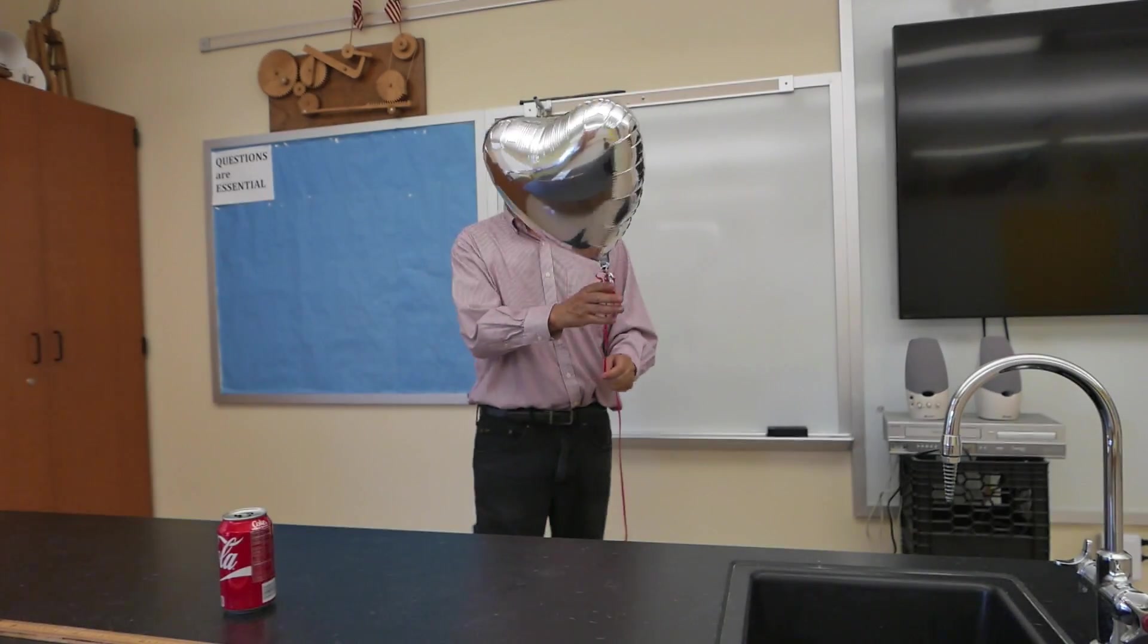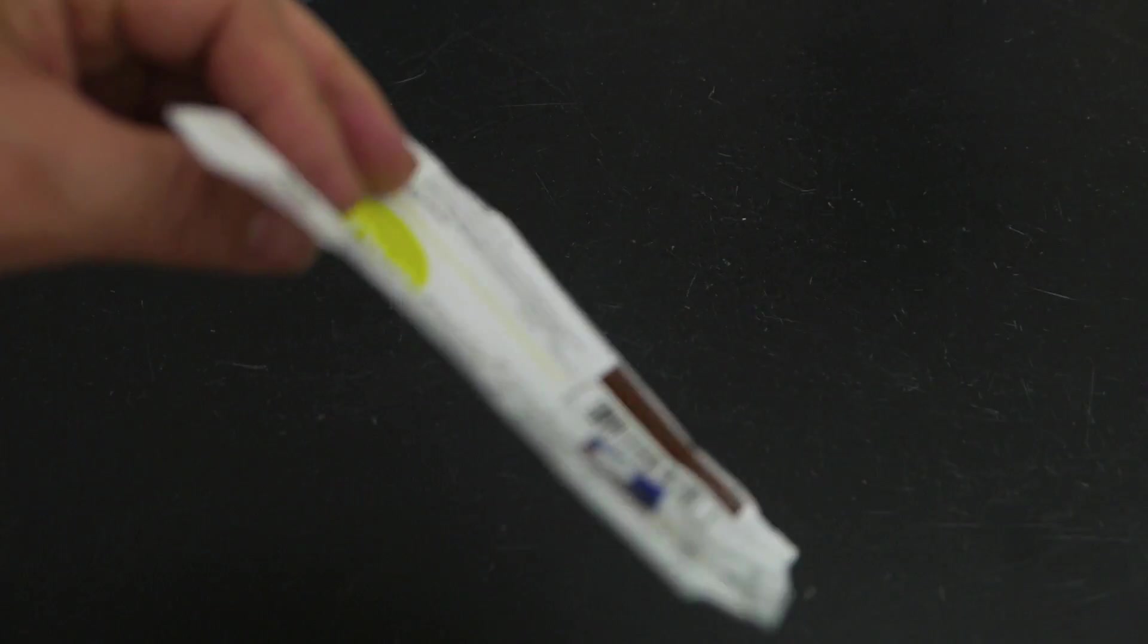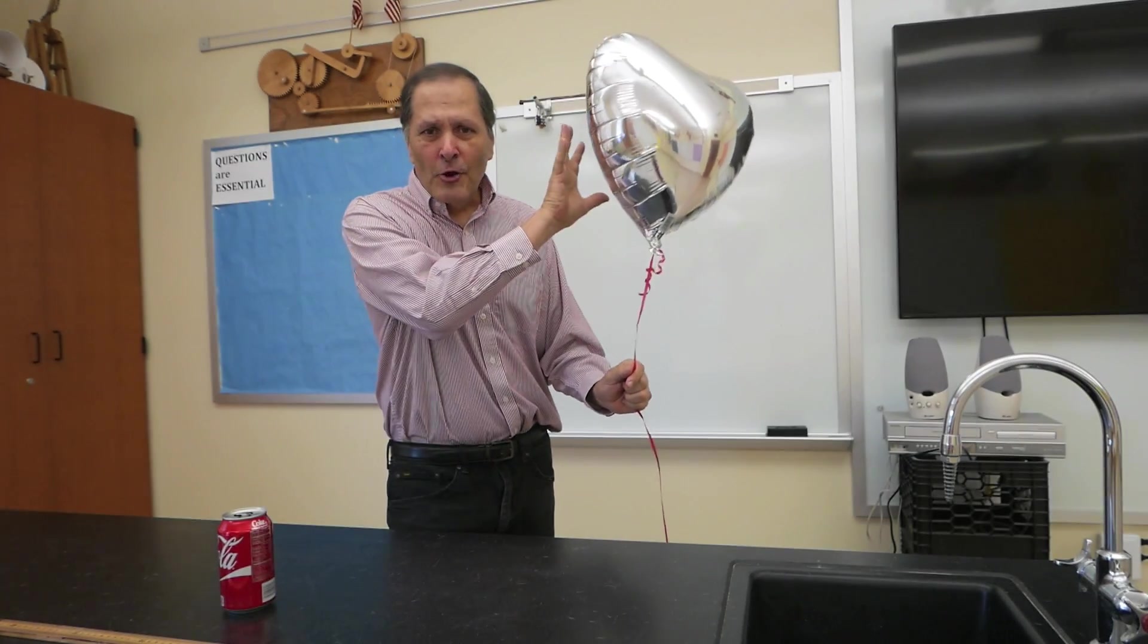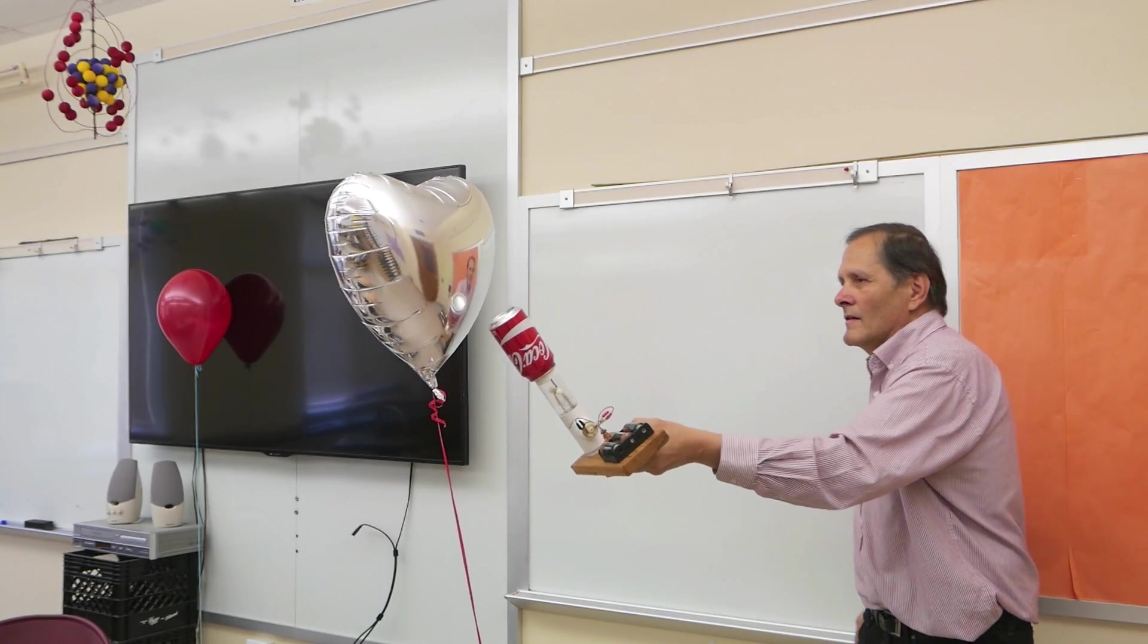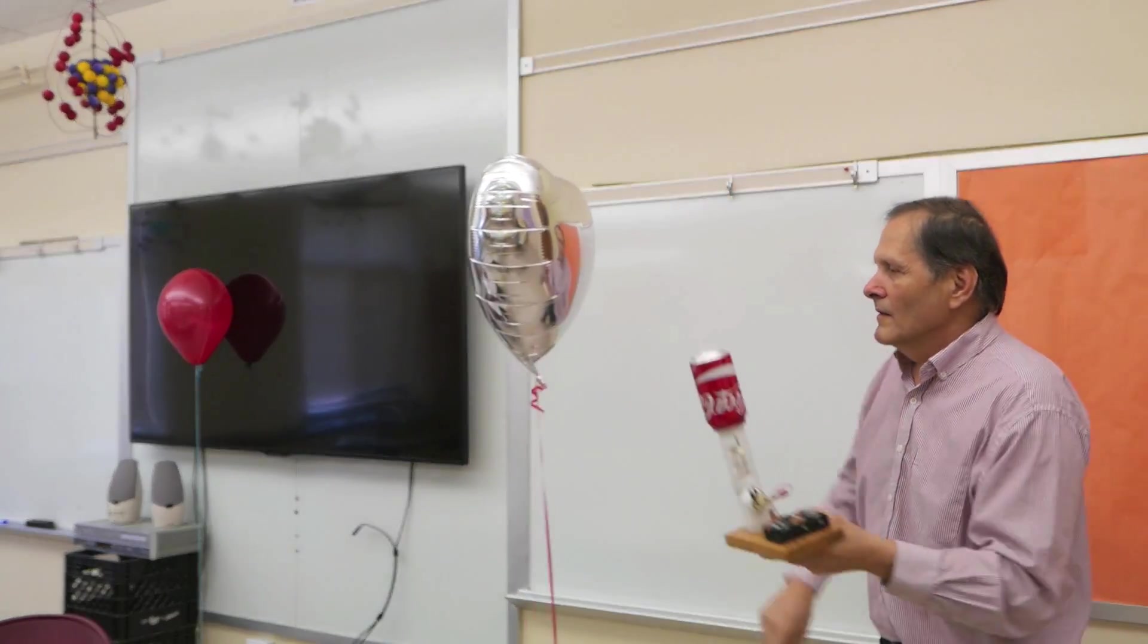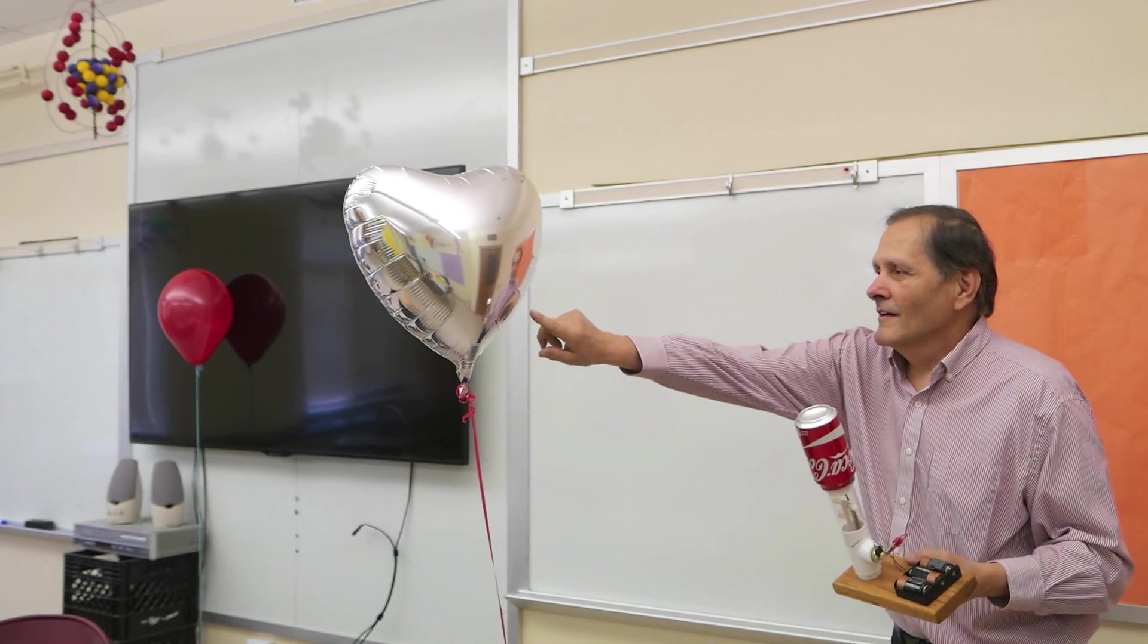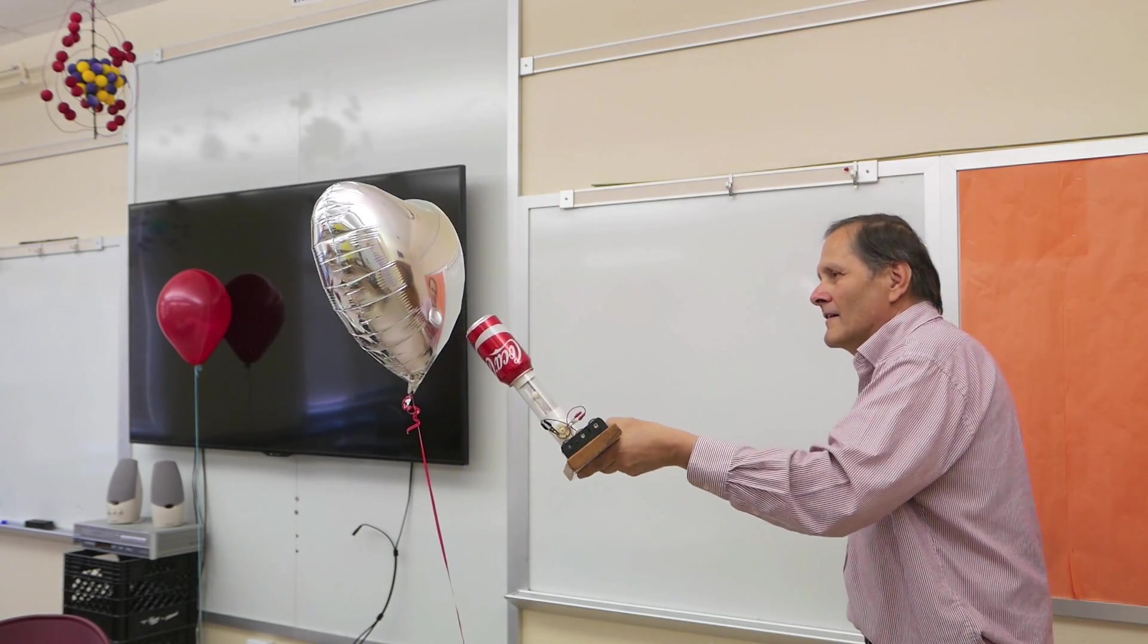Now here we have a balloon made of mylar which we don't normally think of as a metal. But mylar is actually a polyester or a nylon usually covered with a thin coating of metal. In this case it's aluminum. Now we can get this surface to conduct just as we have in the other experiments.